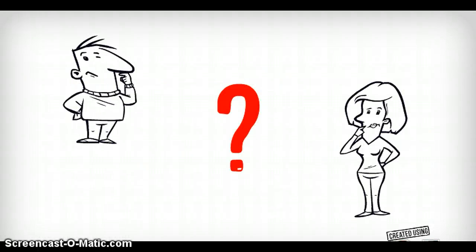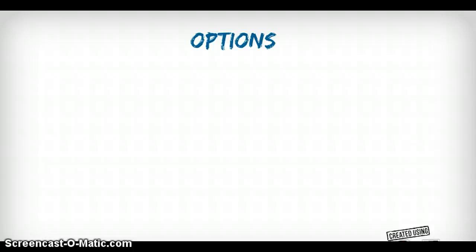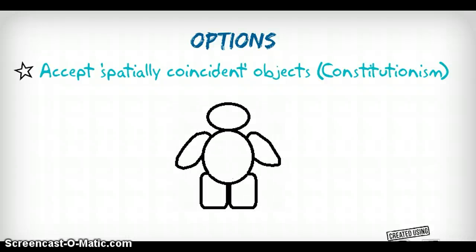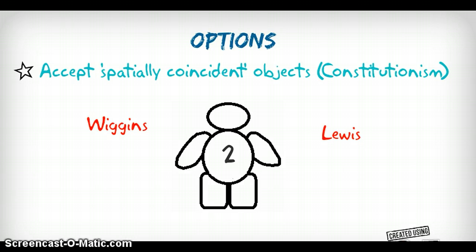So what are we to say about this? Well, we have a number of options. The first is to accept the possibility of spatially coincident objects, a view known as constitutionism. According to this view, White Rider, contrary to our intuitions, is not one object but two, occupying exactly the same space at exactly the same time. He is both White Rider himself and the lump of Play-Doh which constitutes him, which makes him up. This view has been defended by philosophers such as David Wiggins and David Lewis.